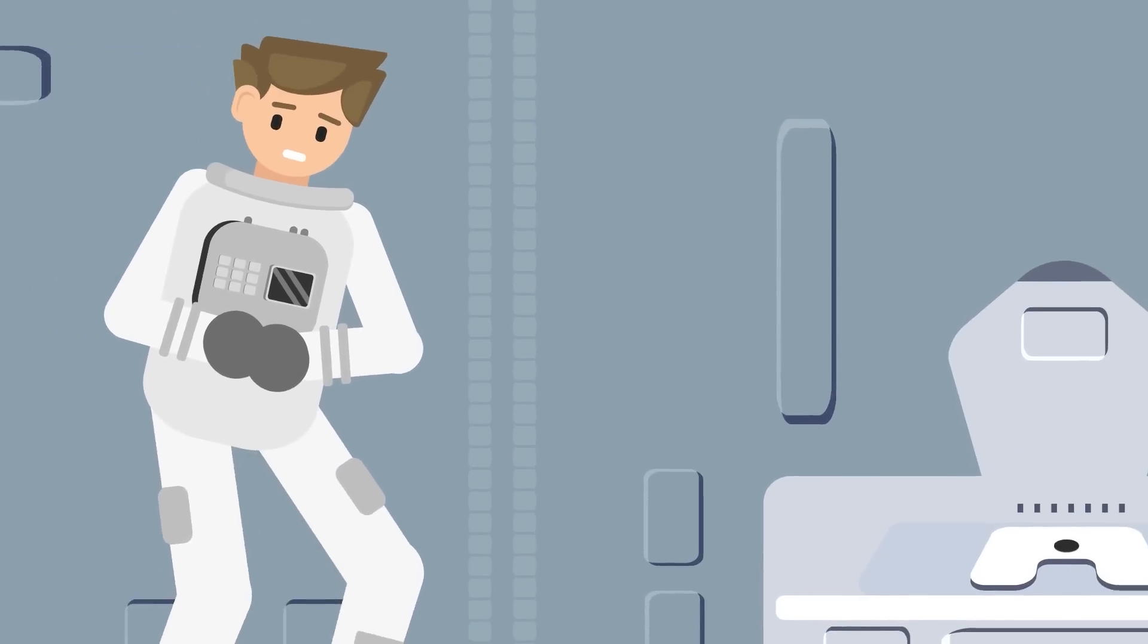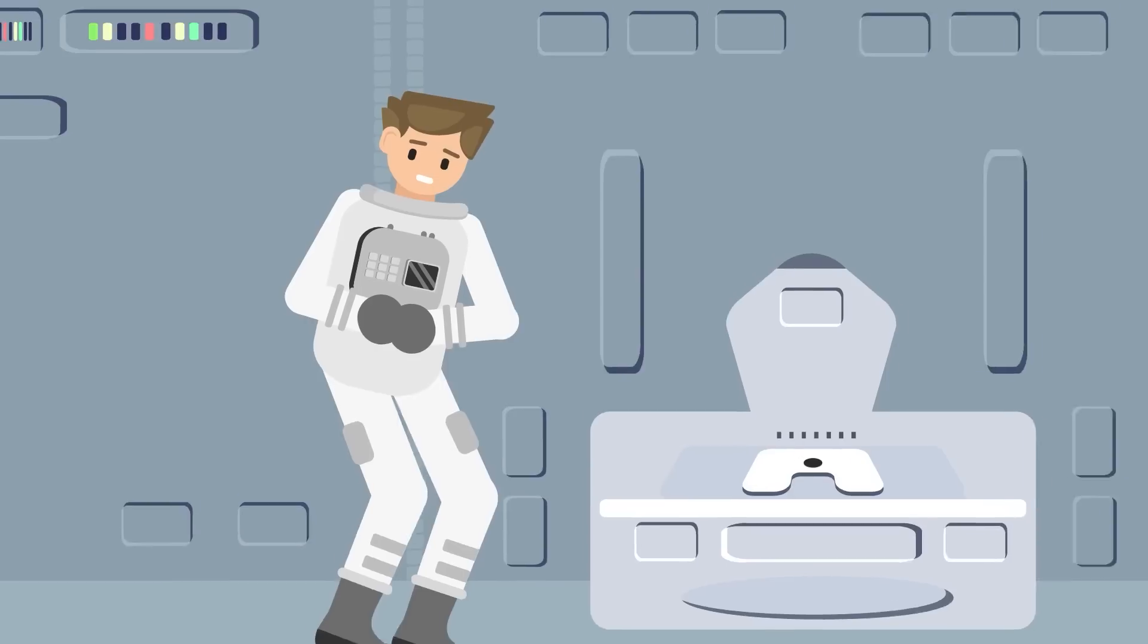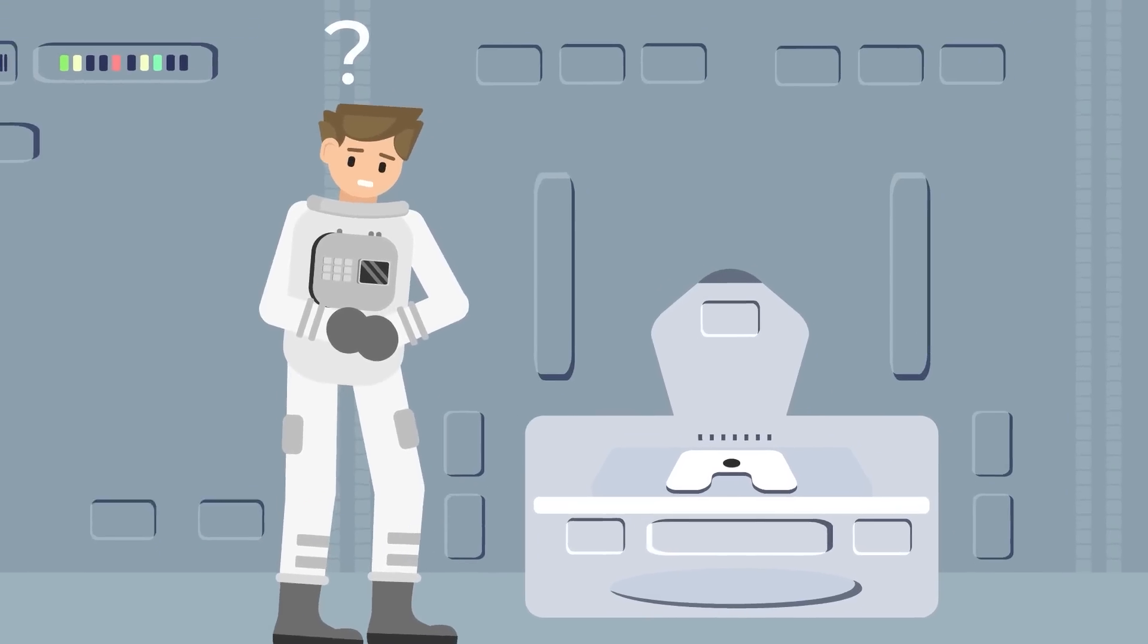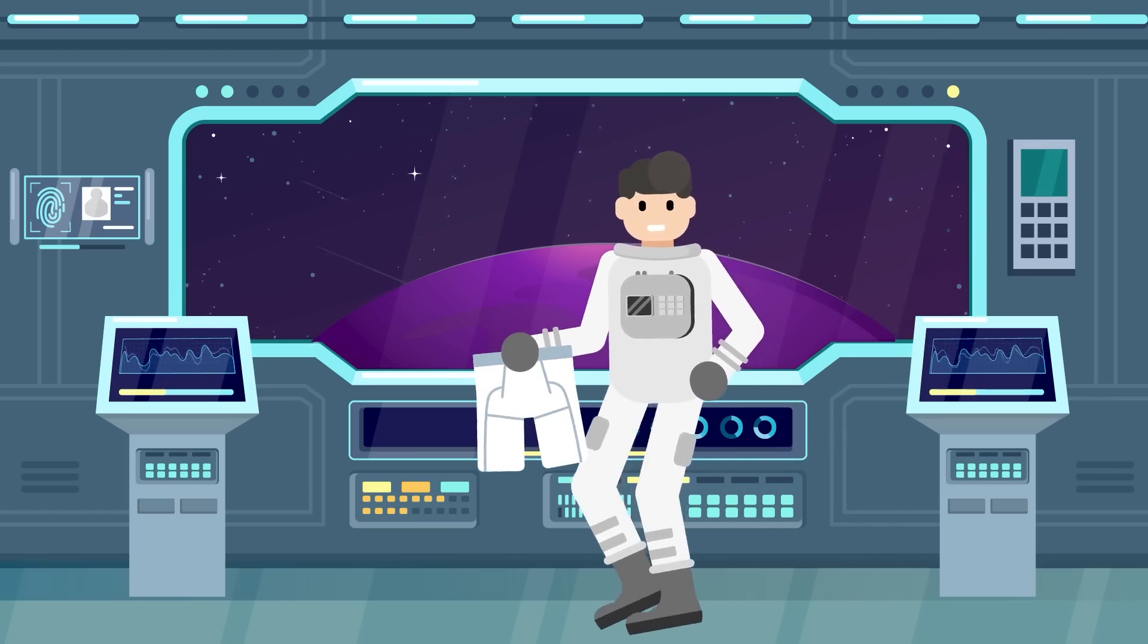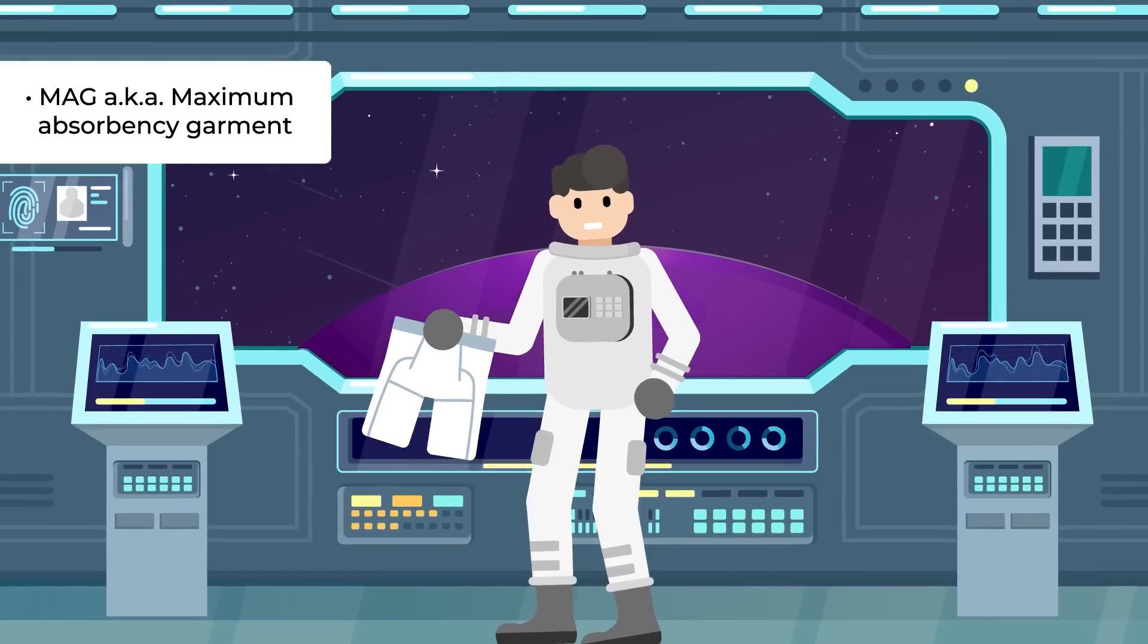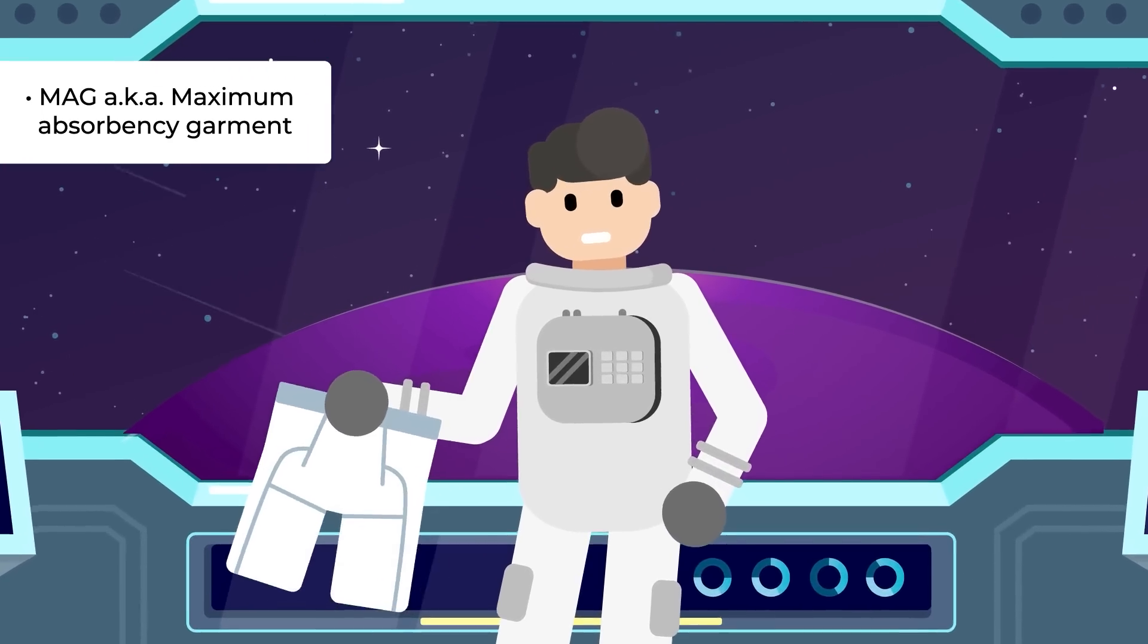Those spacesuits that look incredibly cool can't really easily be removed for a quick squat. This is great for preventing astronauts from dying in the hostile, cold, black silence of space, but not so great for bathroom breaks. So astronauts essentially get Depends adult diapers, or their own slightly cooler sounding versions called MAGs, maximum absorbency garments.